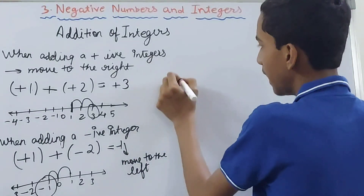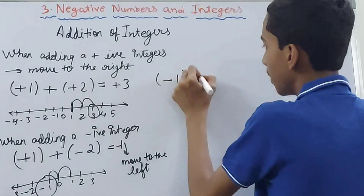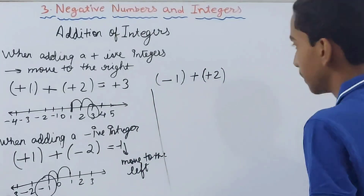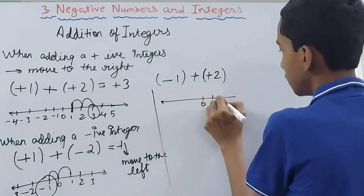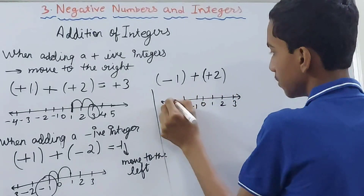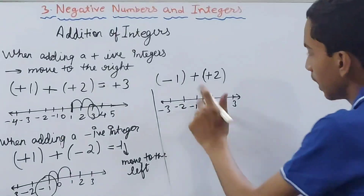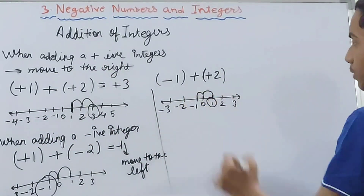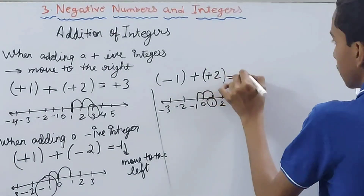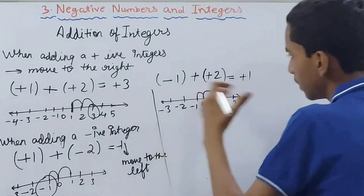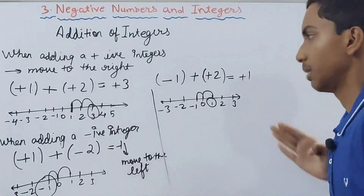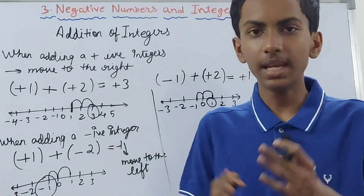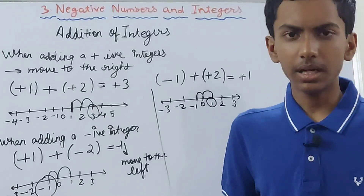One more example: minus 1 plus plus 2. Make the number line, land on minus 1. We are adding a positive integer so we move to the right two places: minus 1 to 0 to plus 1. The answer is plus 1. To summarize: whenever we add a positive integer we move to the right; whenever we add a negative integer we move to the left.